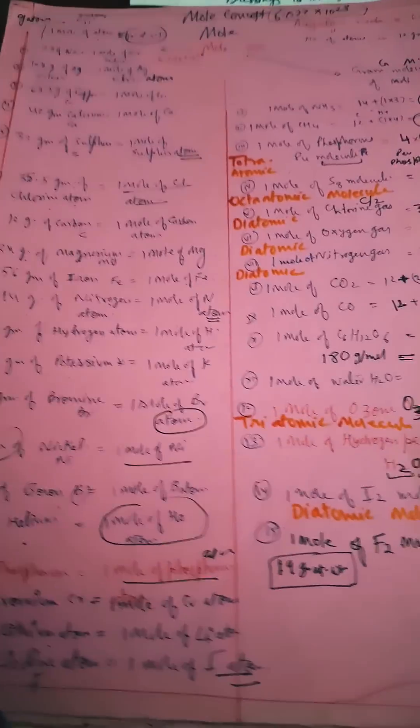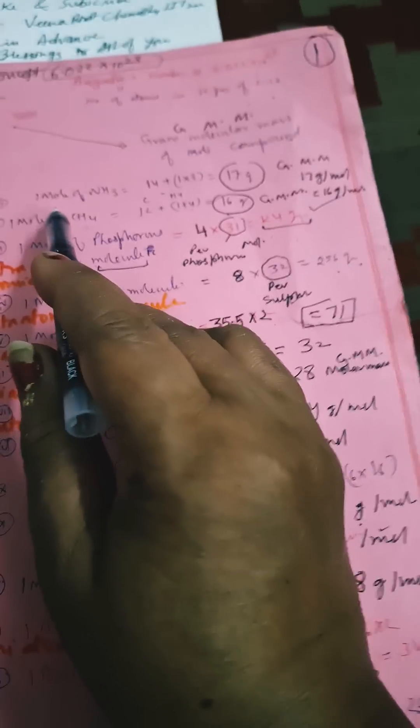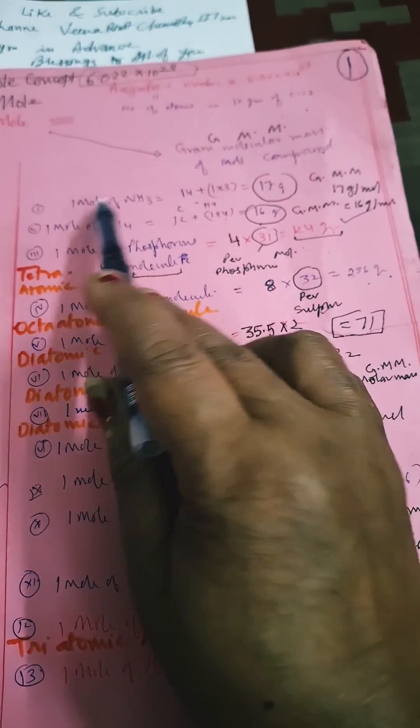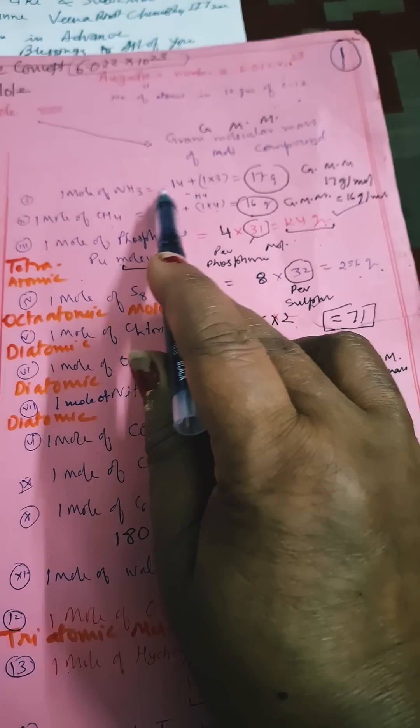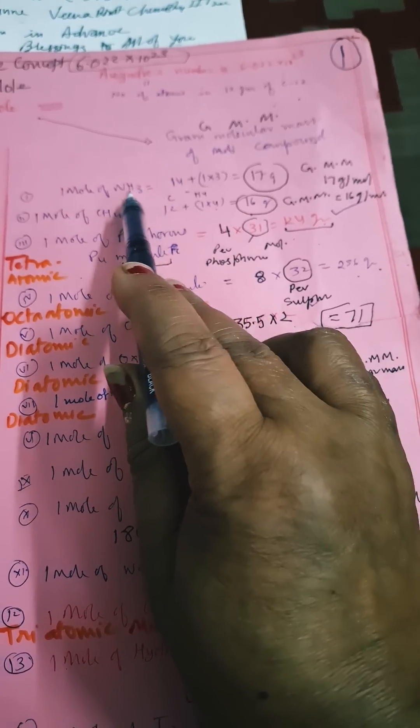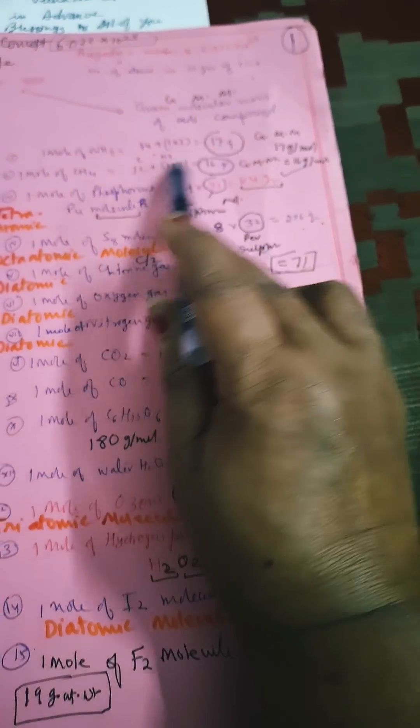Now we will discuss here one mole of NH3. One nitrogen, three hydrogen, so atomic mass will be 14 plus 1 (atomic mass of hydrogen is 1) multiply by 3, so it will be 17 grams.